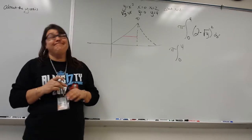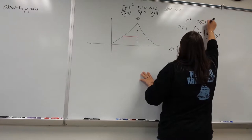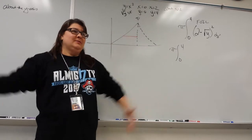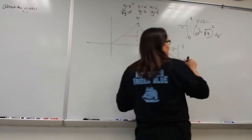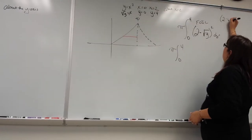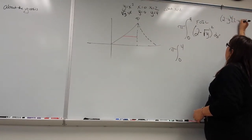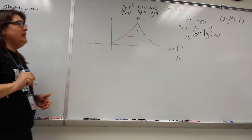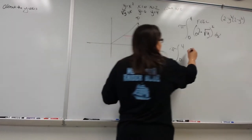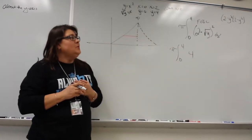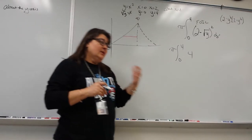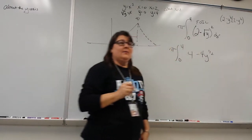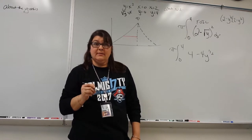You actually have to foil it out. I see a binomial, I see squared, I know I have to foil it. So what I'm foiling is two minus y to the one-half times two minus y to the one-half. If I clean it up: two times two is four. And then negative two y to the one-half minus two y to the one-half is minus four y to the one-half.